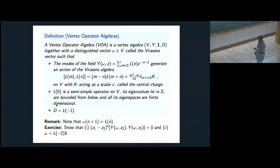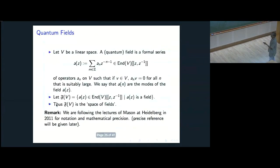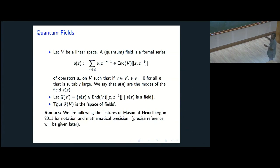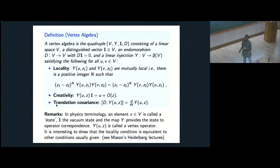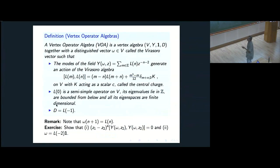A vertex operator algebra has extra structure on top of a vertex algebra. It's a vertex algebra (V, Y, 1, D) together with a distinguished vector omega — the Virasoro vector. Since there is a Y, we can create an operator Y(omega, Z), with modes written as L_N after a shift. Because math and physics conventions are not the same — in physics we shift our mode expansion based on the dimension of the field, while in math it's uniform — you need to watch conventions.